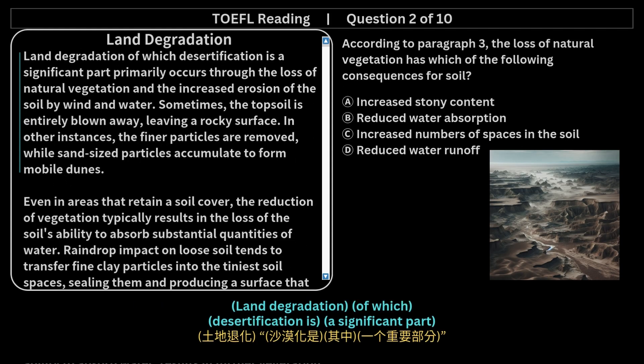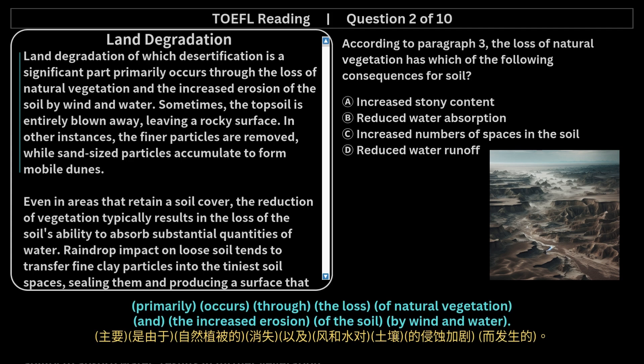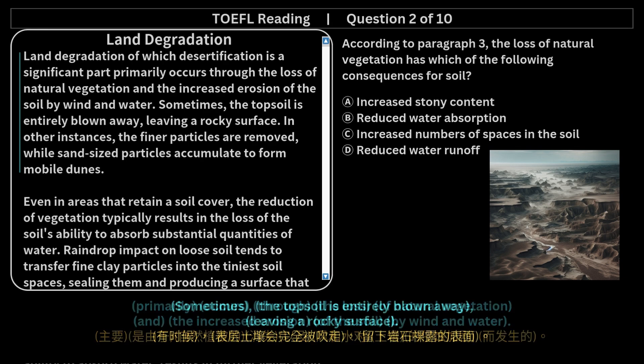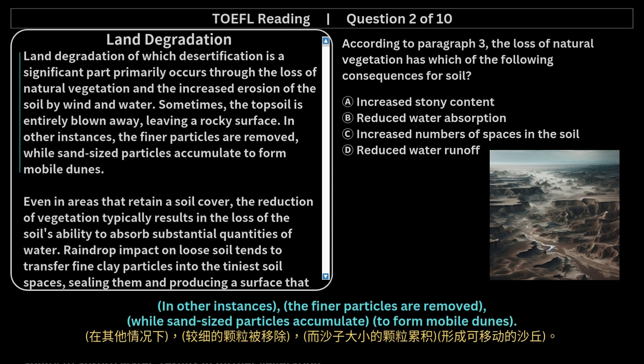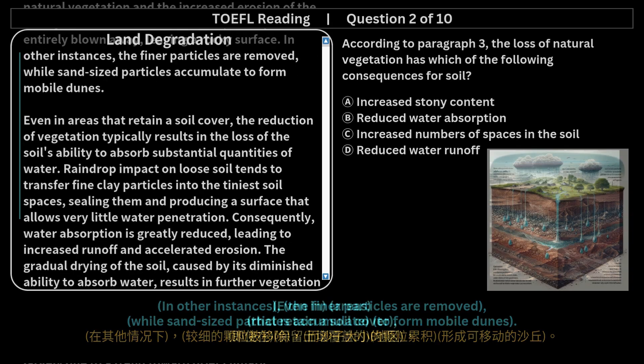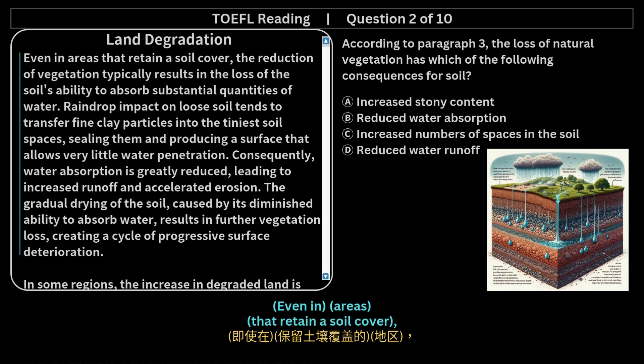Land degradation, of which desertification is a significant part, primarily occurs through the loss of natural vegetation and the increased erosion of the soil by wind and water. Sometimes the topsoil is entirely blown away, leaving a rocky surface. In other instances, the finer particles are removed, while sand-sized particles accumulate to form mobile dunes.